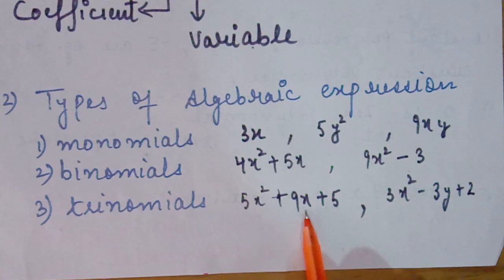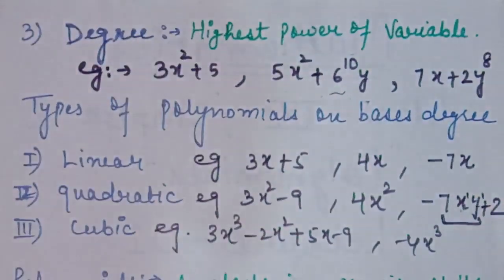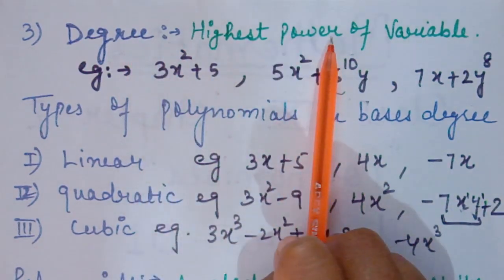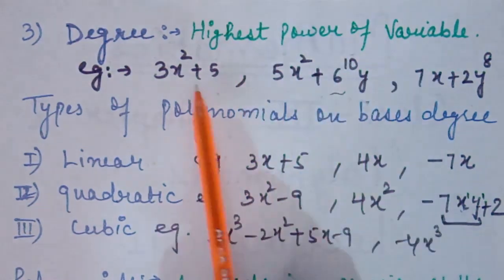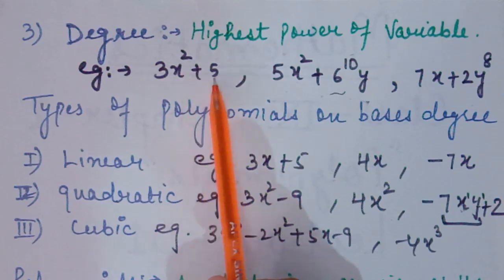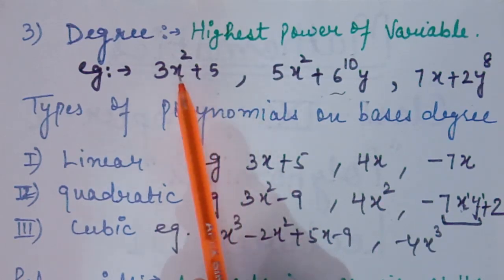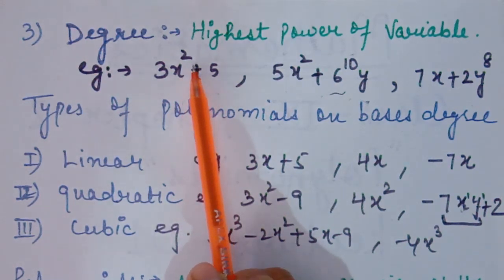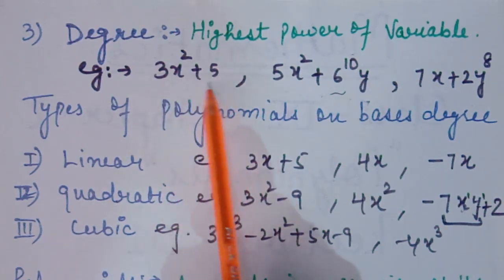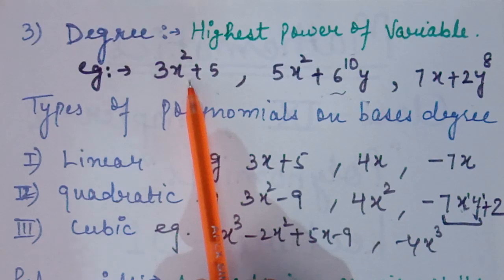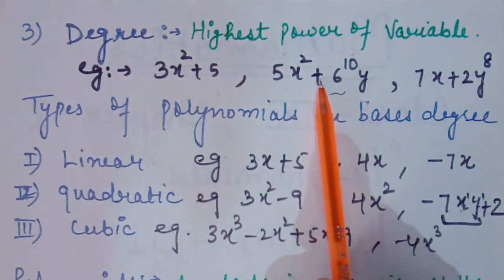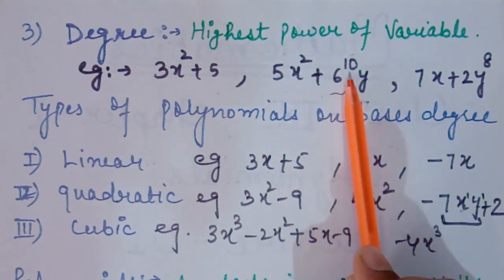If terms are more than three then we call them polynomials. Next topic is degree. Degree is the highest power of the variable. For example, in 3x squared plus 5, we have only one variable x and the power of x is 2, so the highest power of the variable is 2. Therefore the degree of this polynomial is 2.